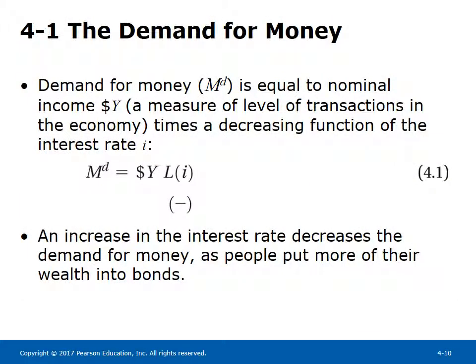Equation 4.1 gives the money demand function. Demand for money equals nominal income — a measure of the level of transactions in the economy — times a decreasing function of the interest rate. An increase in the interest rate decreases the demand for money as people put more of their wealth into bonds. The demand for money increases in proportion to nominal income and depends negatively on the interest rate. The relation between money demand and the interest rate for a given level of nominal income is represented by the money demand curve.